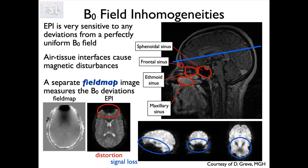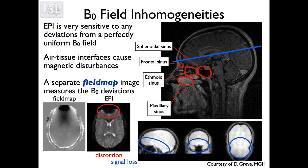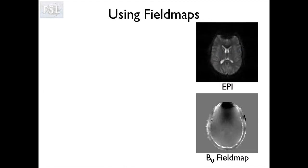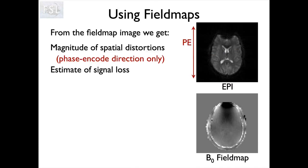We use the field maps to predict how much distortion we're going to get. We already know the direction that distortion will happen — along the phase encode direction, which the operator sets when planning the scan. Typically it's anterior-posterior, but not always. So we can use a field map to estimate the magnitude of the spatial distortion at each location and along which direction, and we can also use it to estimate the amount of signal loss.